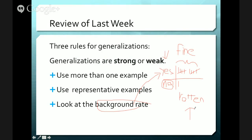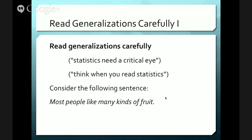If you need more information, please look at the previous flip, number three. Read generalizations carefully. Our textbook says statistics need a critical eye — critical in this context means thinking about thinking. We can simplify this to: think when you read statistics, or just say read generalizations carefully. We want to pay attention to what we are hearing in generalizations. So look at the following sentence: most people like many kinds of fruit.